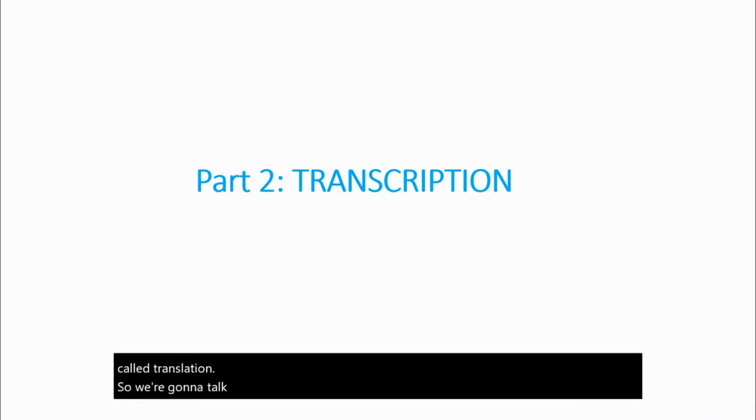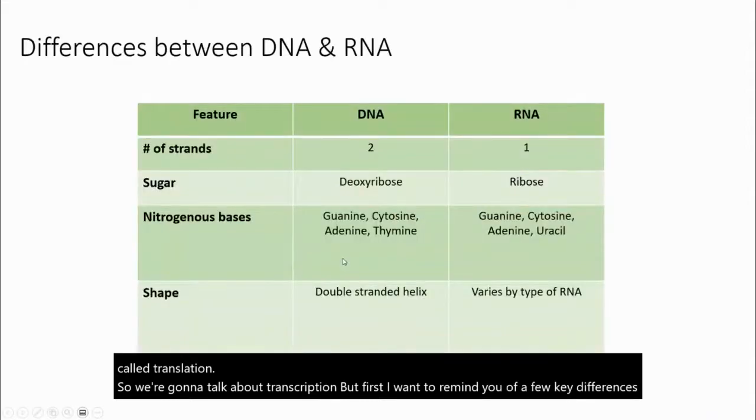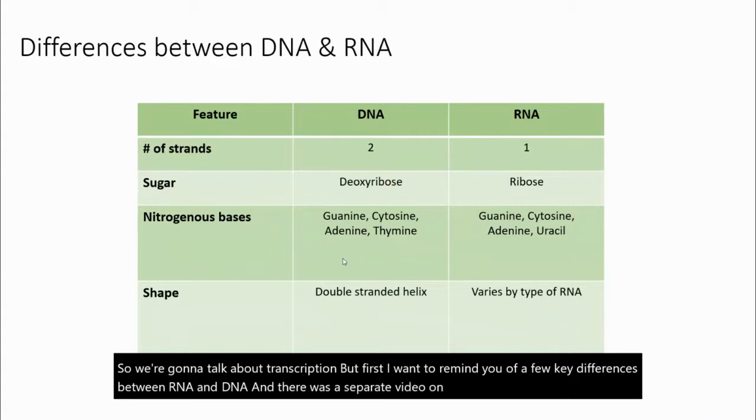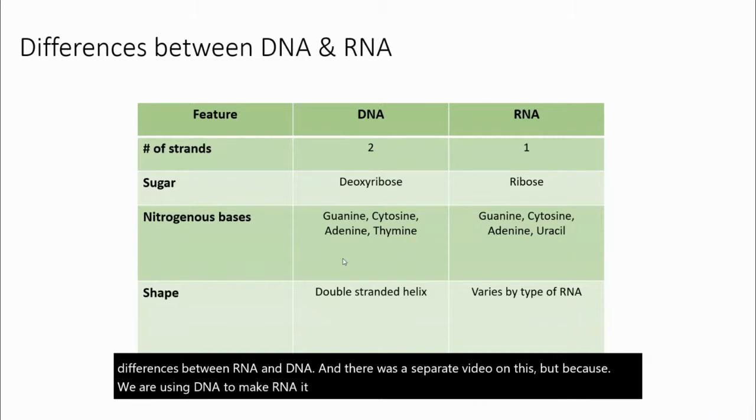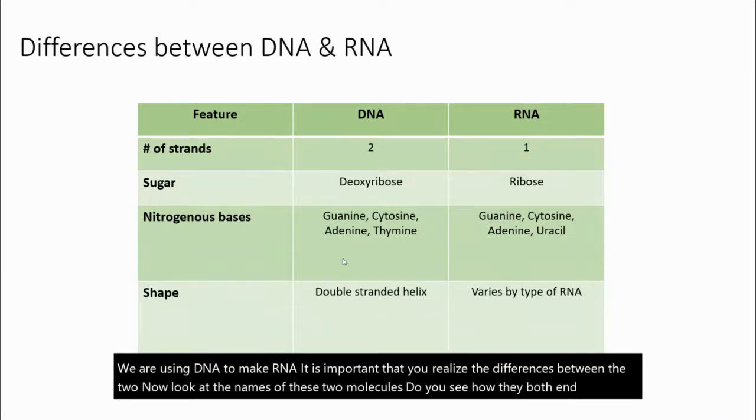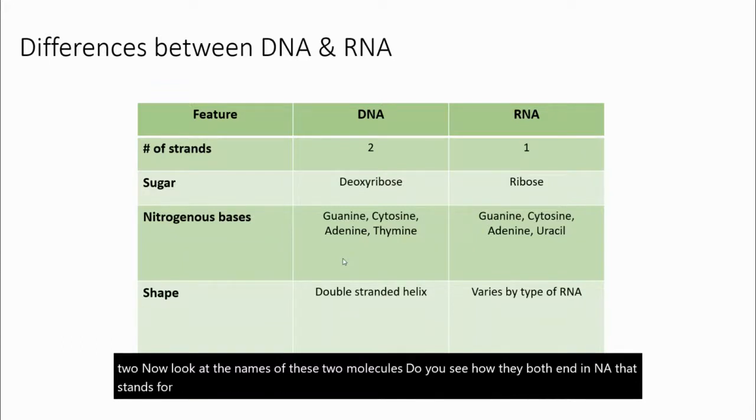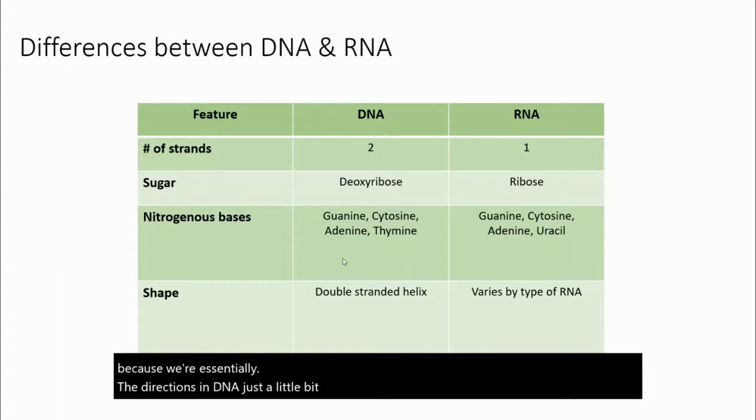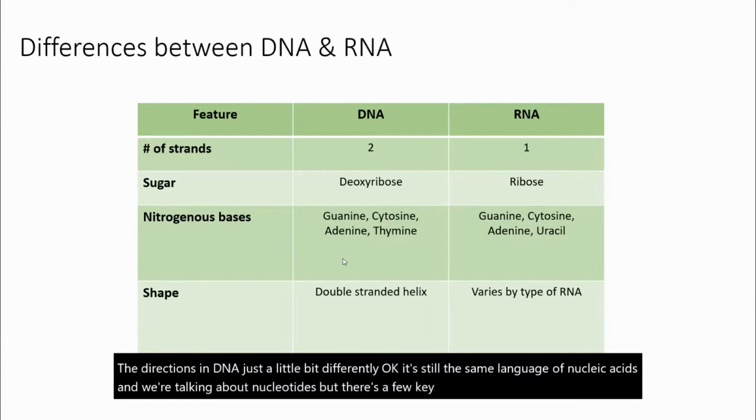So we're going to talk about transcription, but first I want to remind you of a few key differences between RNA and DNA. Because we are using DNA to make RNA, it is important that you realize the differences between the two. Both end in NA, which stands for nucleic acids, and that's why this process is called transcription because we're essentially writing the directions in DNA just a little bit differently. It's still the same language of nucleic acids and nucleotides, but there's a few key differences.